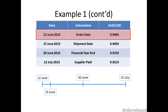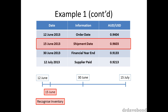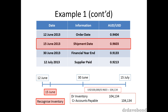We can safely ignore the 12th of June because Company A doesn't recognise the asset until the 15th. On the 15th, Company A will recognise the inventory and the payable in the usual fashion, but the amount is in question. To convert the foreign currency — the USD — into the functional currency, the AUD, we use the spot exchange rate of 0.9603, which gives us a value of AUD 104,134.